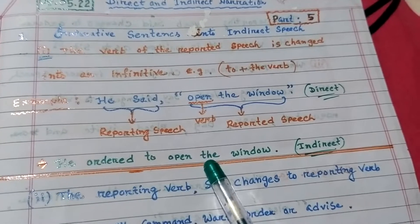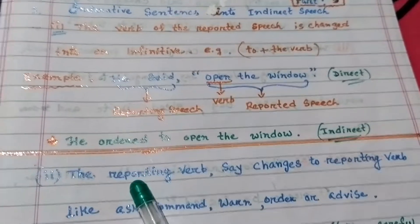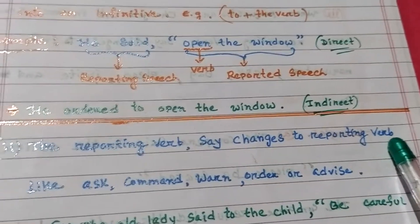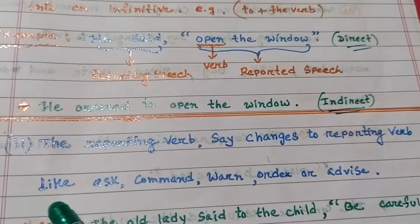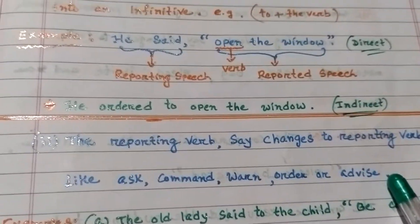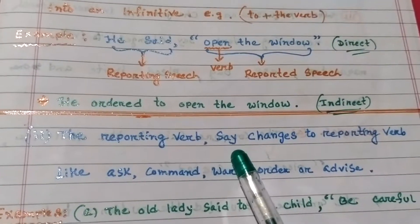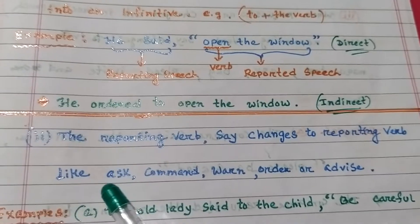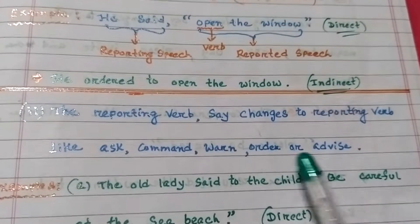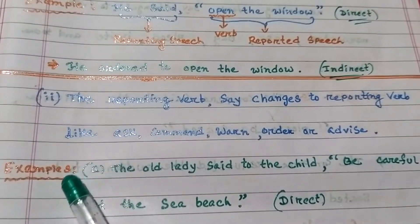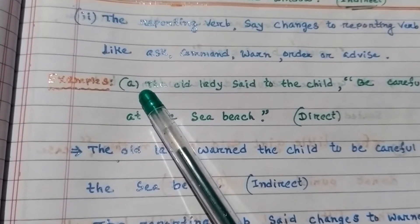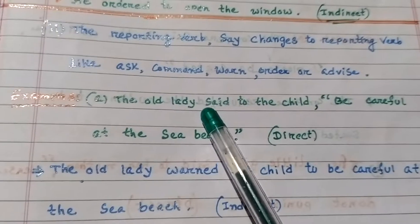Number two: the reporting verb 'say' changes to reporting verbs like command, order, or advise. So the reporting verb 'said' is replaced by command, order, or advise.